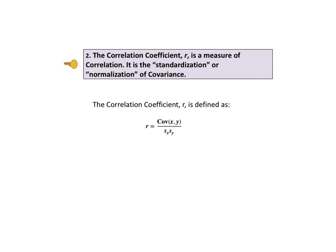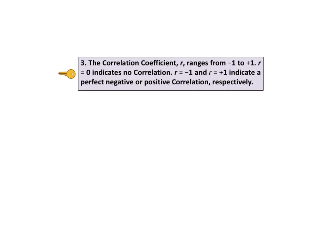And the correlation coefficient, r, tells us both the direction and the strength of the correlation. Key number 3 tells us that the correlation coefficient, r, ranges from negative 1 to plus 1. r equals 0 indicates no correlation.